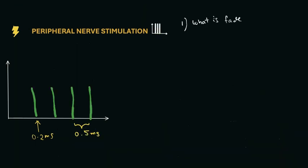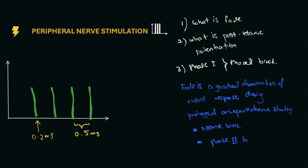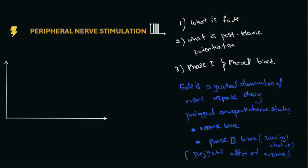Final points that are important I need to emphasize are what is fade, post-tetanic potentiation, and a bit about phase one and phase two block. Fade is a gradual diminution of evoked response following prolonged or repeated nerve stimulation. This can be due to non-depolarizing muscle relaxant block or phase two block if we are talking about succinylcholine. The mechanism is due to prejunctional effect of non-depolarizing muscle relaxant. Here you see the fade.